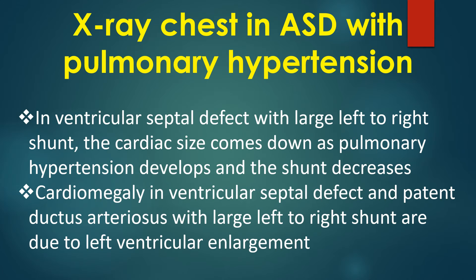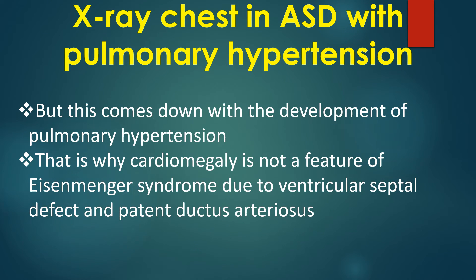In ventricular septal defect with large left-to-right shunt, the cardiac size comes down as pulmonary hypertension develops and the shunt decreases. Cardiomegaly in ventricular septal defect and patent ductus arteriosus with large left-to-right shunt are due to left ventricular enlargement, but this comes down with the development of pulmonary hypertension. That is why cardiomegaly is not a feature of Eisenmenger syndrome due to ventricular septal defect and patent ductus arteriosus.